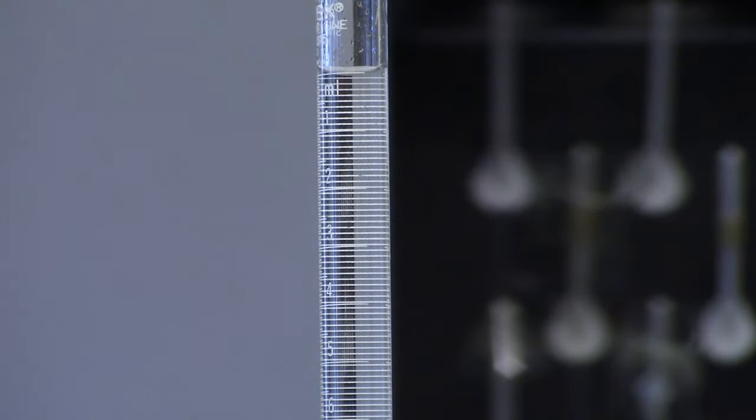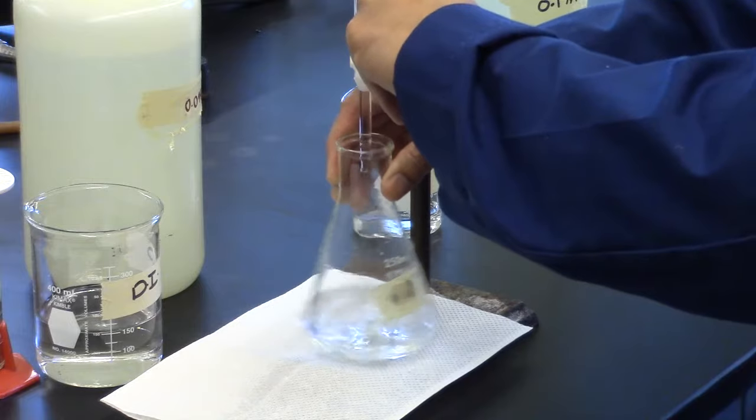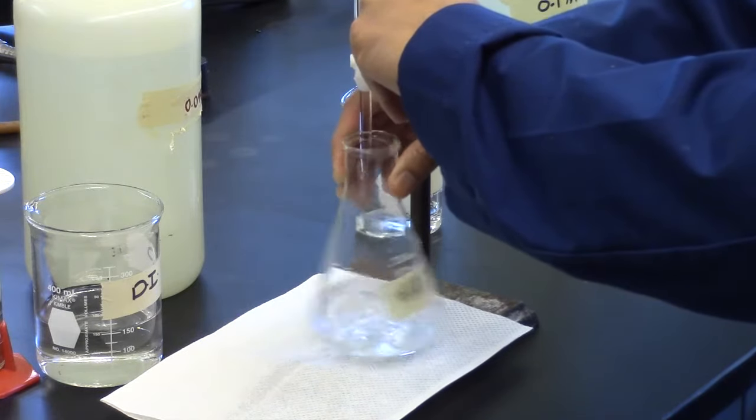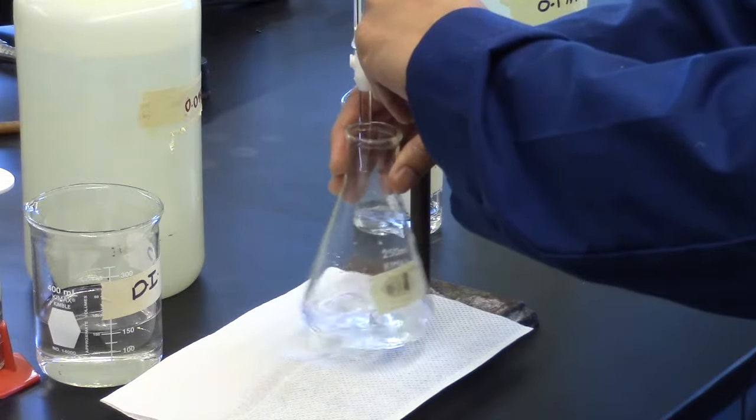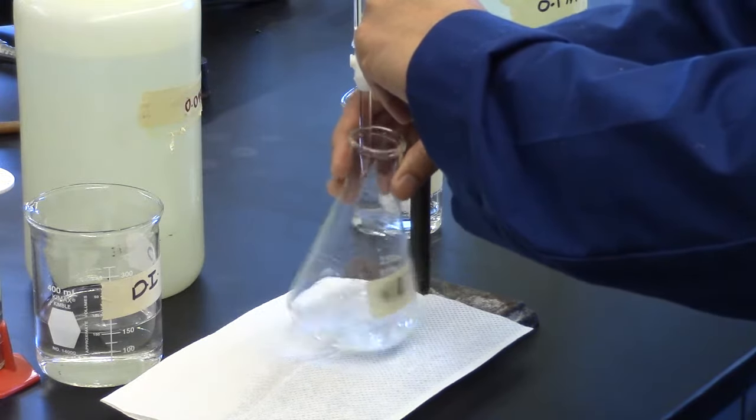Record initial burette reading and add sodium hydroxide solution in a controlling manner. Place the flask containing the indicator and sulfamic acid on a white sheet of paper or paper towel to make the endpoint easier to see.